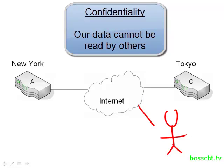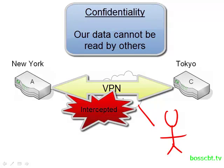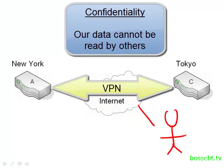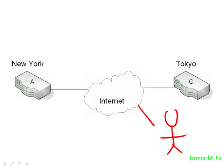If we have a VPN between New York and Tokyo and somebody in the middle is able to intercept some of that data, they're not going to be able to read it or make any sense of it. It'll just be meaningless data to them. So our data is protected at that level.